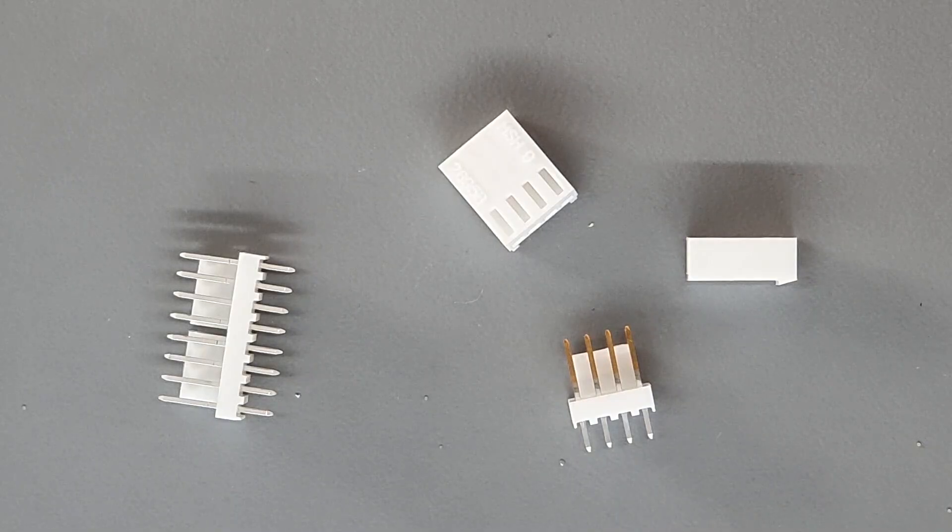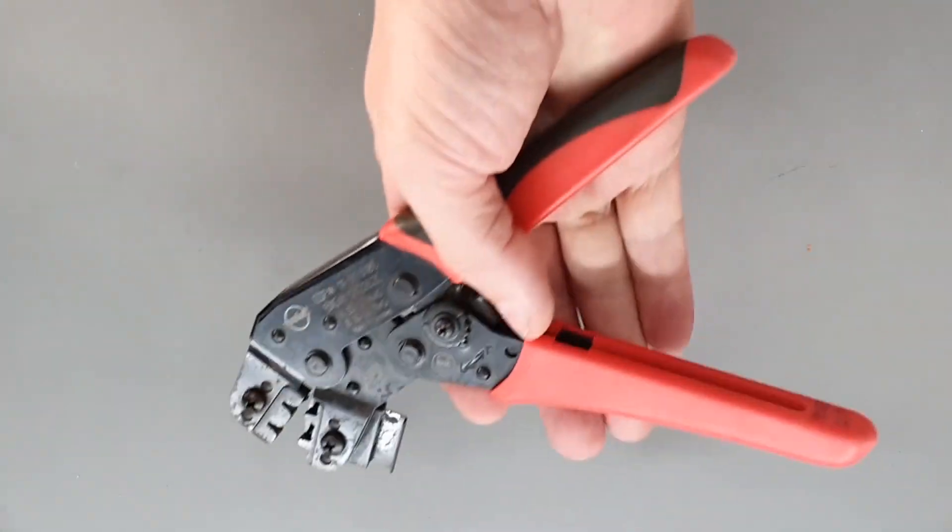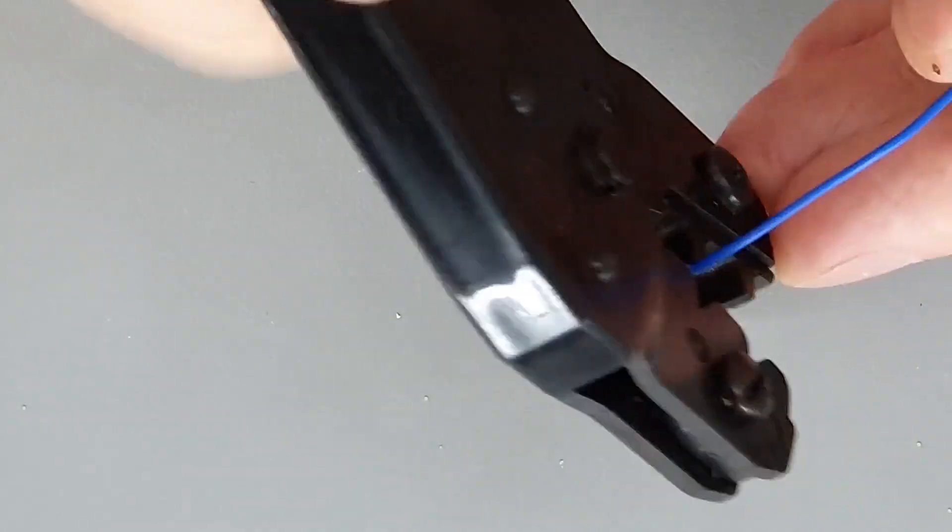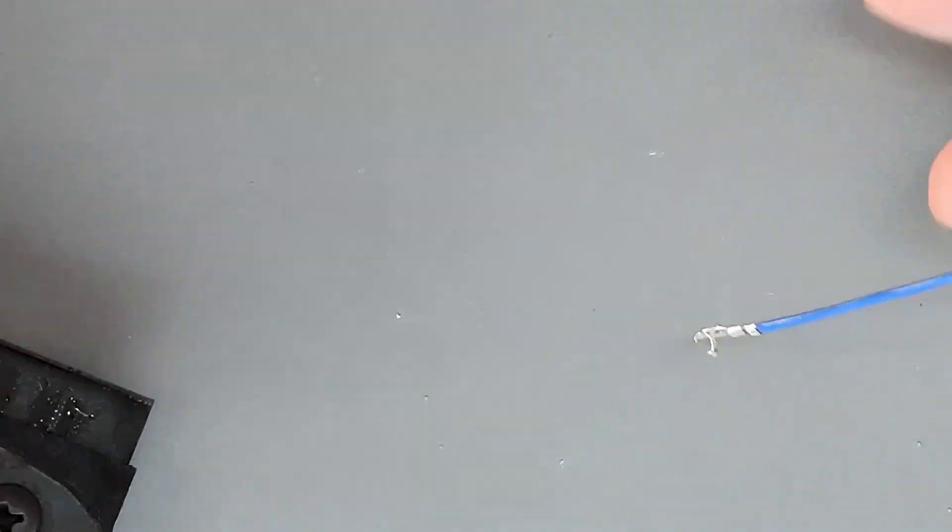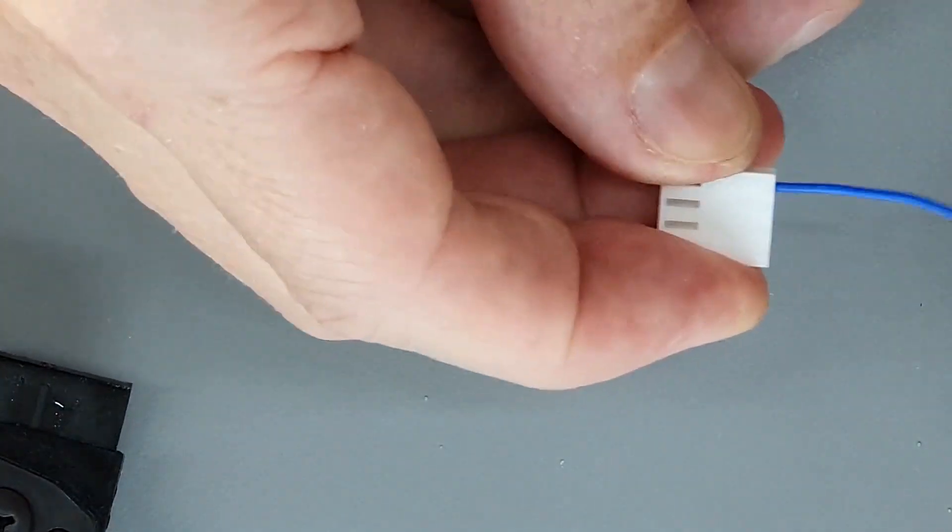12, and 20 pins is a good start. Buy the fancy expensive crimper by the manufacturer. There is no alternative if you really want to make a reliable connection. It's going to be painfully expensive but anything else is going to be totally flaky.